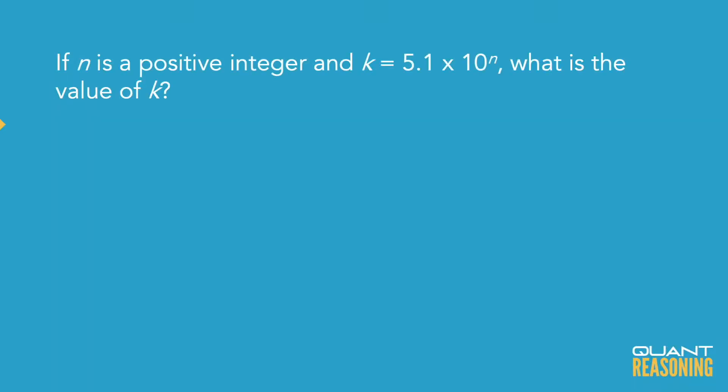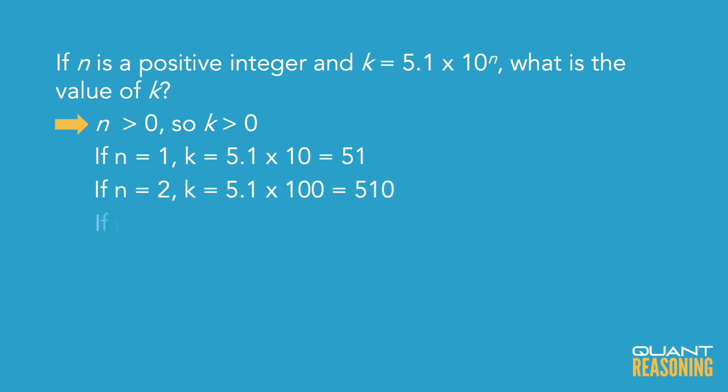What does that tell us? Well, n is at least 1 — that's the smallest positive integer. If n were 1, then k would be 51. If n is 2, k would be 510. If n is 3, k would be 5100, and so on. So we know k is also a positive integer, and reading left to right, it starts with the digits 5 and 1, followed by some unknown number of zeros.